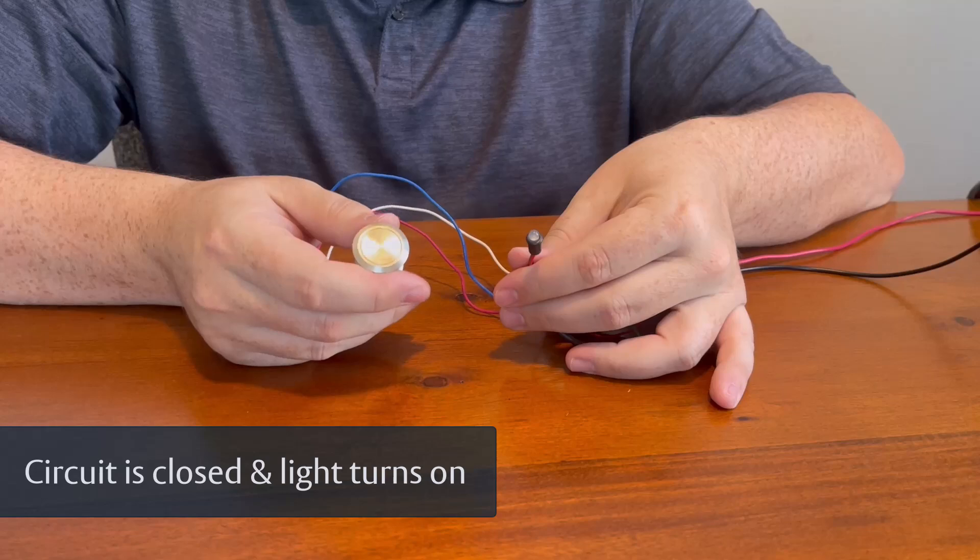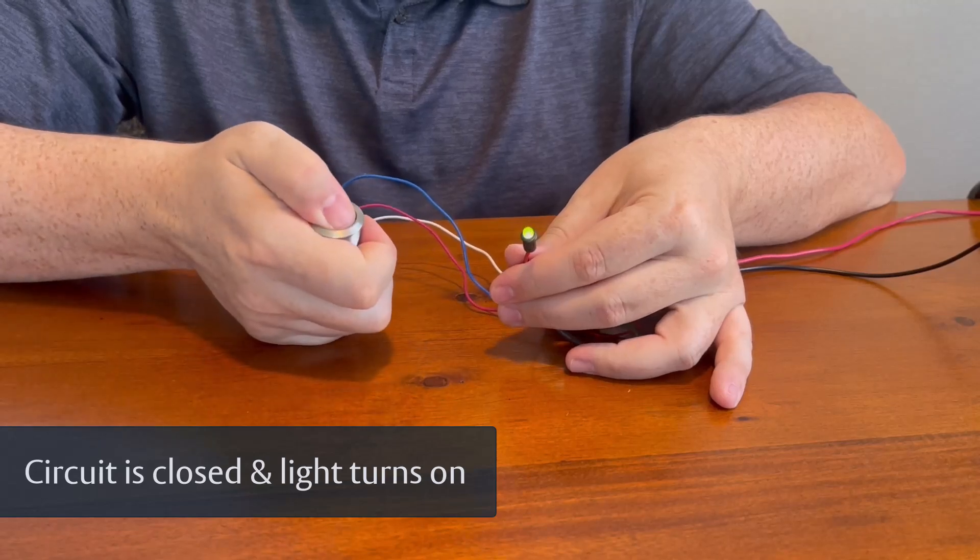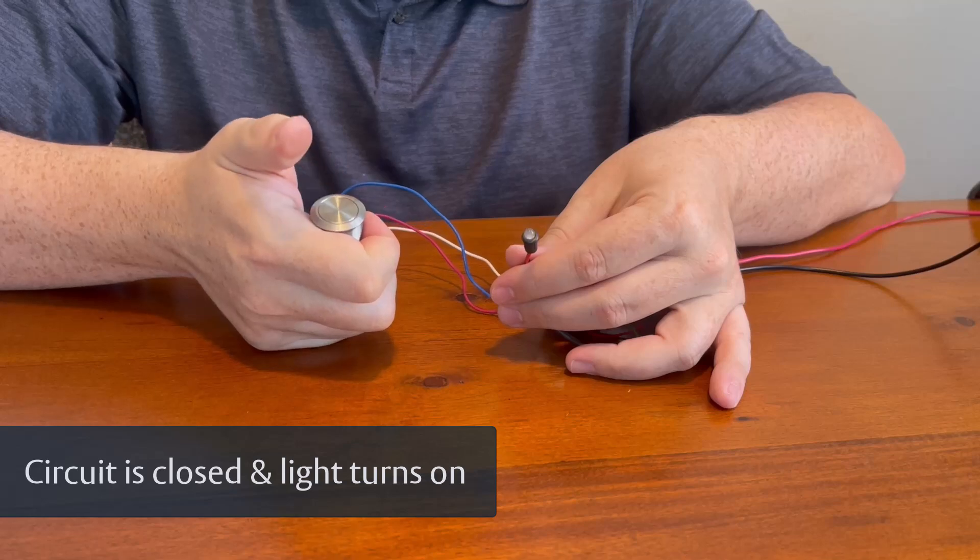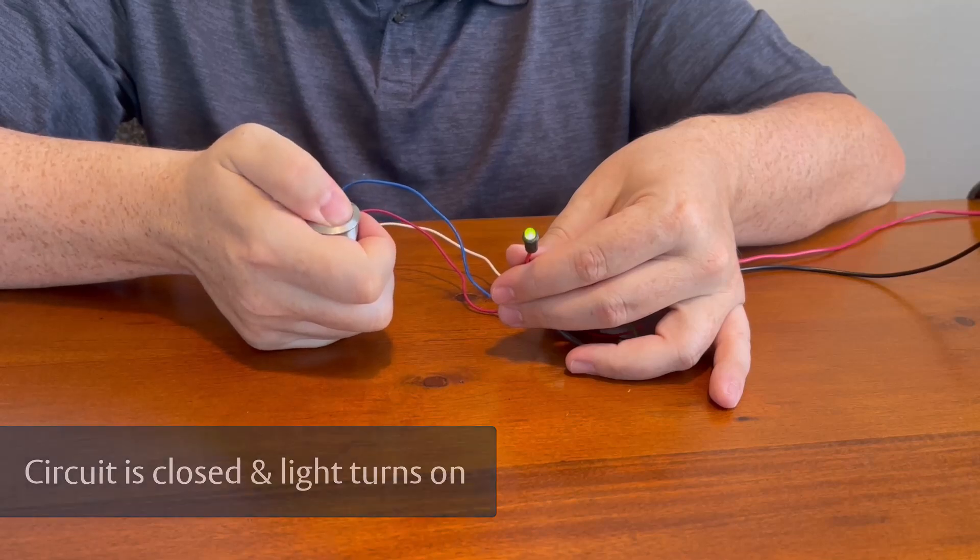When the switch is activated, it closes the circuit, allowing current to flow. Think of it like a light switch. When you flip it on, the circuit closes, and the light turns on.